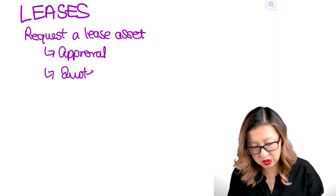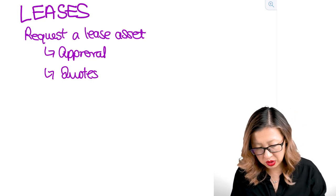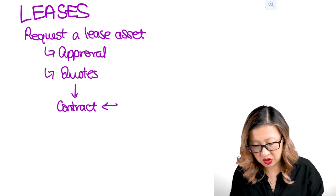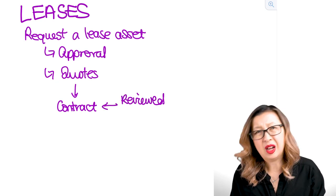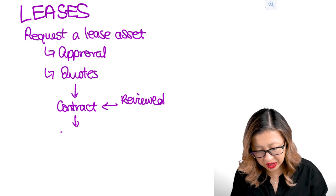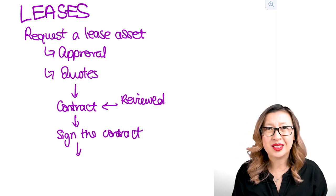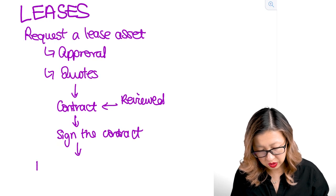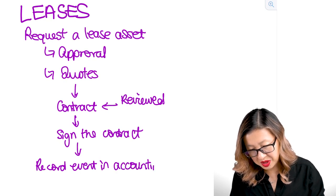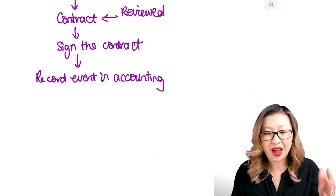There's probably going to be a process to get quotes from different companies who supply the leased asset. Once you've got a quote, there's probably going to be some form of contract, and it's really important that the contract is reviewed by someone — probably from a legal perspective — to make sure that there has been that legal review. Then the parties to the contract need to sign it, and then we need to handle the accounting processes and record the event in accounting.